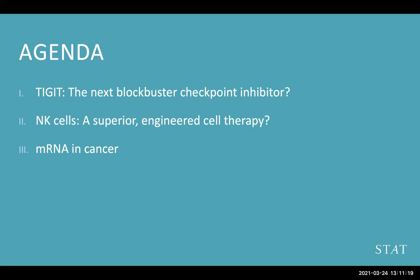The agenda is simple. We're going to talk about TIGIT, which is a new checkpoint inhibitor — we're probably all familiar with PD-1 and PD-L1 checkpoint inhibitors, and TIGIT is a new target getting a lot of buzz, particularly at larger pharma companies. Then I want to talk about NK cells — an emerging, off-the-shelf cell therapy getting a lot of attention, with some really interesting early data from the last couple of ASH meetings. Lastly, mRNA, which we're all very familiar with from the COVID vaccines, can also have applications as a therapeutic in cancer.